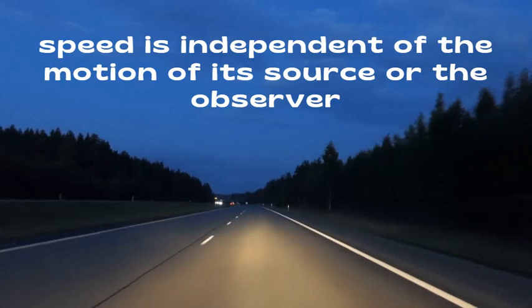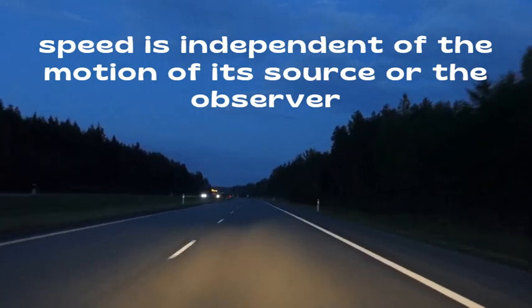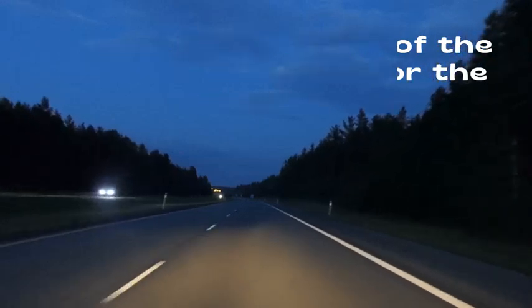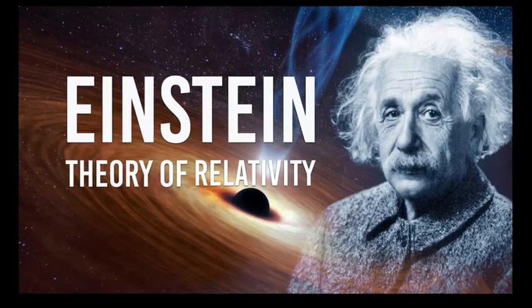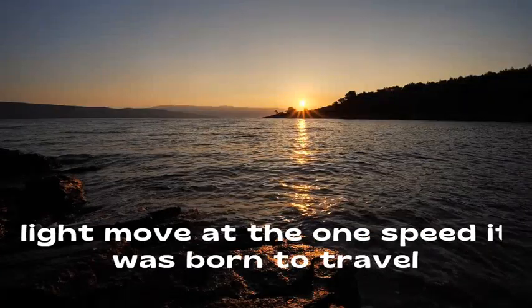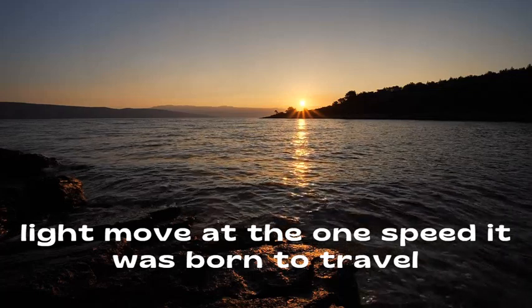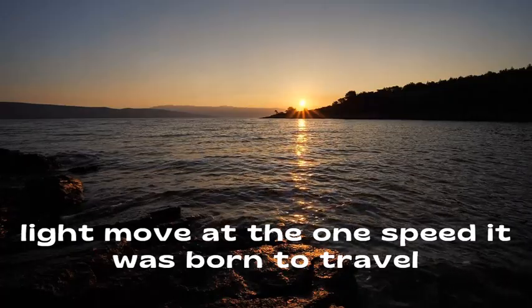What is remarkable is that the speed is independent of the motion of its source or the observer. Whether the light comes from a distant star or a nearby flashlight, its speed in the vacuum remains the same. This constancy is the foundation of Einstein's theory of relativity, which fundamentally reshaped our understanding of space and time. So when we look at the stars or marvel at a sunrise, we are witnessing light moving at the one speed it was born to travel, constant, unchanging, and extraordinary.